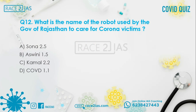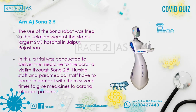Question number 12: What is the name of the robot used by the Government of Rajasthan to care for coronavirus patients? The right answer is Option A, Sona 2.5. The use of the Sona robot was tried in the isolation ward of the state's largest SMS Hospital in Jaipur. A trial was conducted to deliver medicine to corona victims through Sona 2.5, reducing contact between medical staff and corona-infected patients.